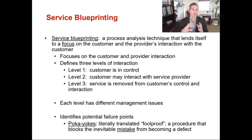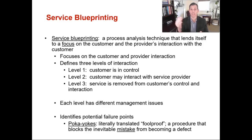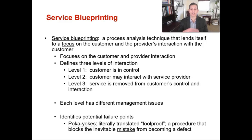In service blueprinting, there are three levels of customer interaction. Level one: the customer is in control. They walk into the facility, they see if they want to stay and let you perform whatever service they're there for. Level two: the customer may interact with the service provider, generally when the service is being performed. And level three: the service is removed from the customer's control and interaction — now the service firm is doing what they're supposed to be doing, whether it's an oil change or cutting your hair. They are now in control of that process. Each level has its different managerial issues that you need to work through.